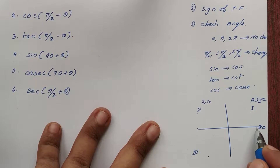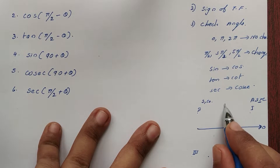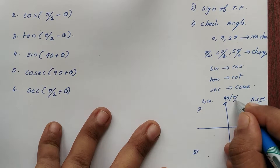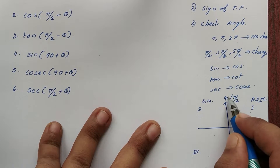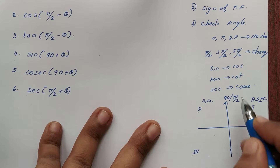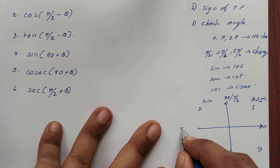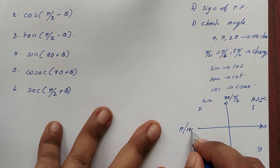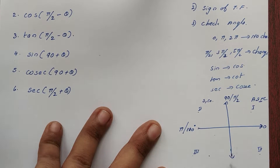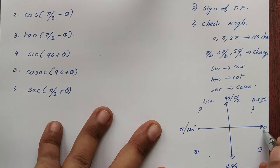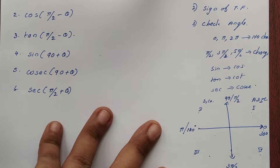Before you rotate this ray, this point will be 90 degrees, that is pi by 2. Then 180 degrees, 3 pi by 2 is 270 degrees, and 360 degrees is 2 pi.